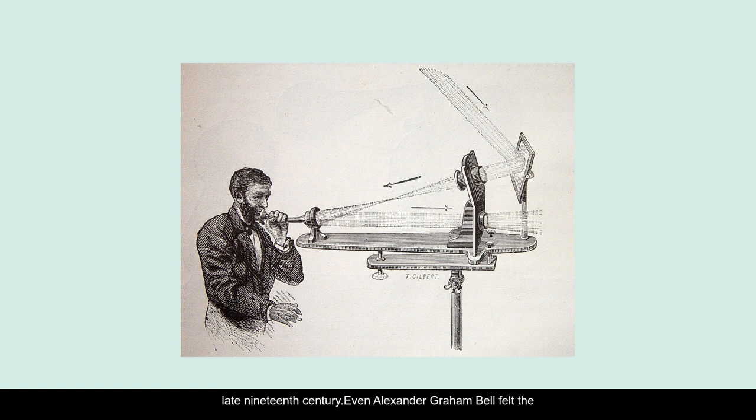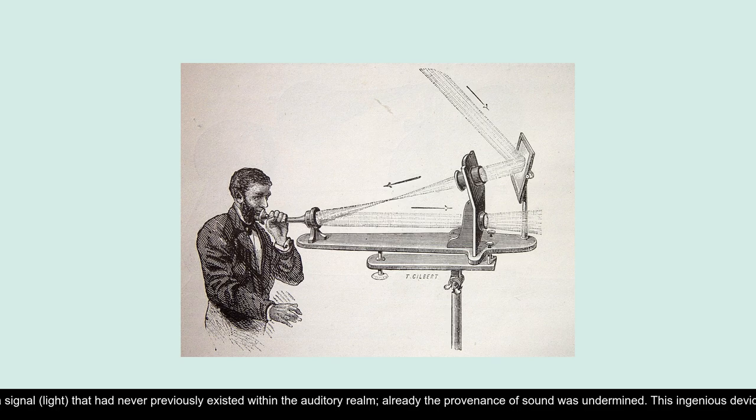Even Alexander Graham Bell felt the seductive promise of a commingling of the auditory and the visual. When, having successfully demonstrated a new communication device he called the photophone, he exclaimed to his father: 'I have heard articulate speech produced by sunlight. I have heard a ray of the sun laugh and cough and sing. I have been able to hear a shadow, and I have even perceived by ear the passage of the cloud across the sun's disc.' Bell had heard a signal, light that had never previously existed within the auditory realm. Already the provenance of sound was undermined.